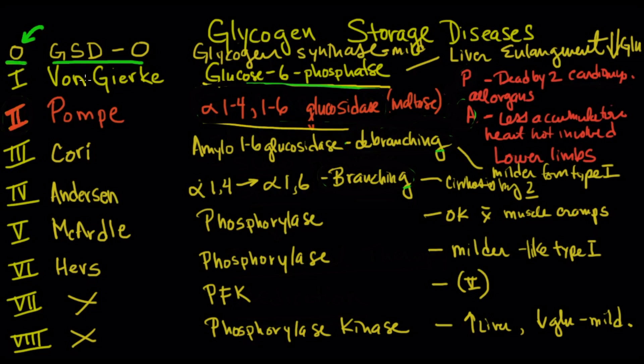Interestingly, type zero, which is very rare, is a problem with actually making it. And so what happens is that the liver is actually pretty small in these cases and it's actually quite mild. But all of the other ones that you would be testing on is one through eight. Let's go through those.